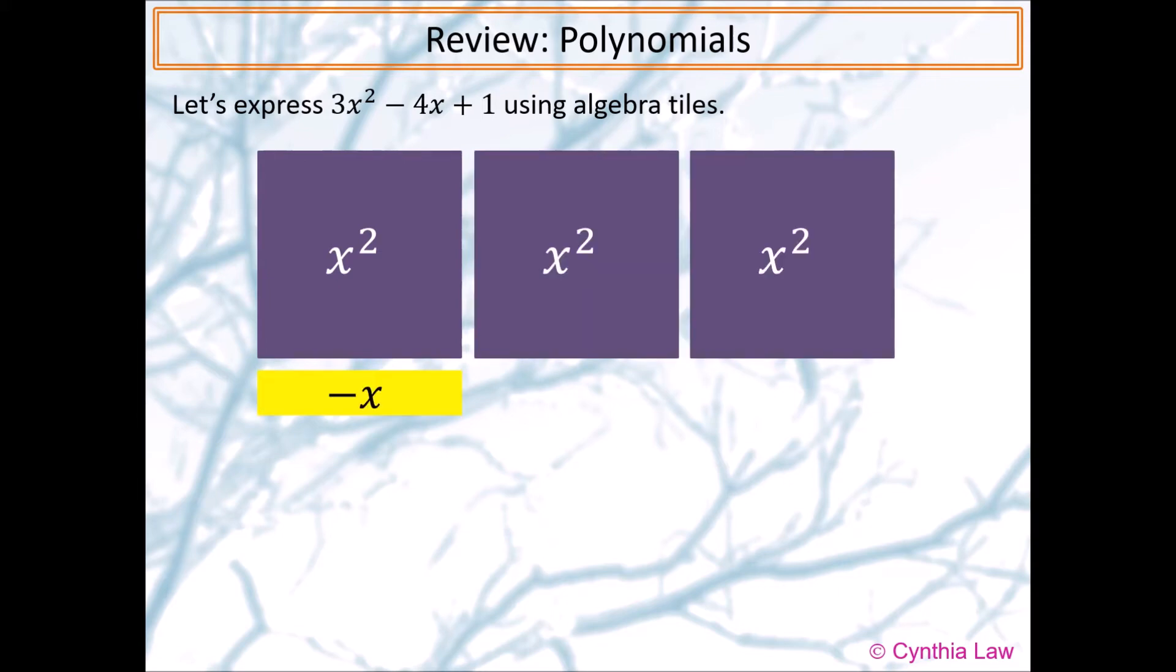Next, for the x term, the coefficient is negative 4, so we use 4 yellow rectangular strips. Lastly, for the constant term, we only need 1 small purple square to represent the positive value 1.